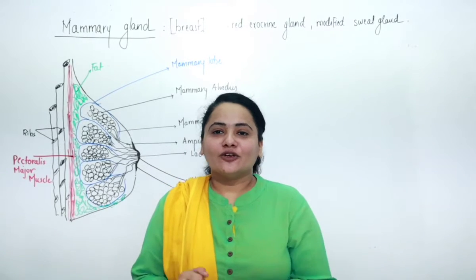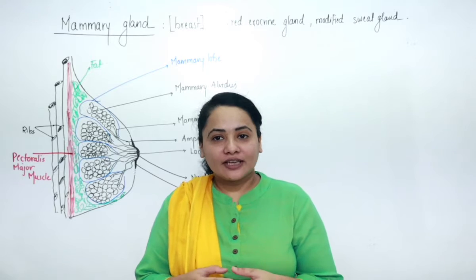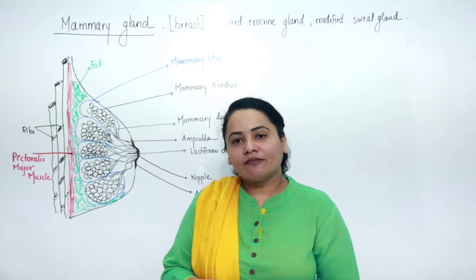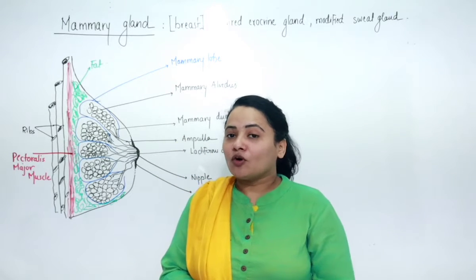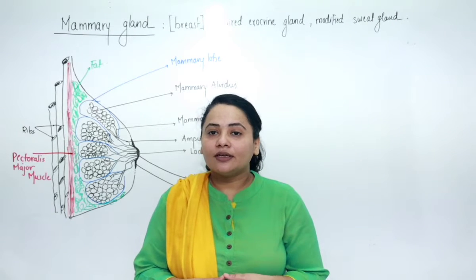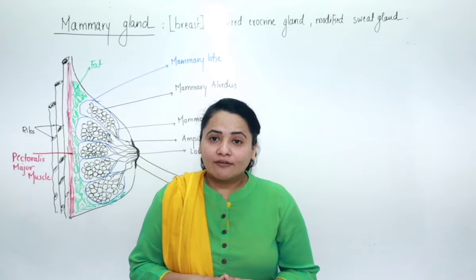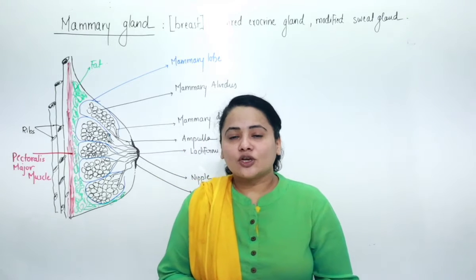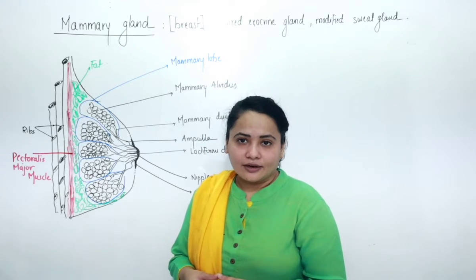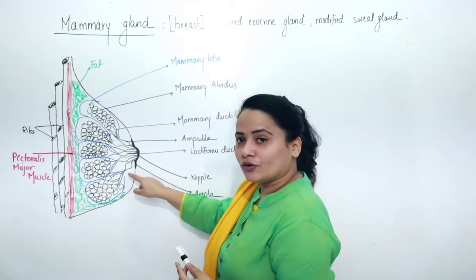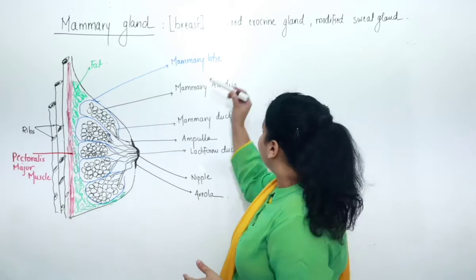After completing external genitalia, let's begin the next topic: the mammary gland. The mammary gland is also called a secondary sex organ in females, which develops under the influence of sex hormones at puberty. All mammals have mammary glands, and their function is to feed the newborn baby for nourishment. The mammary gland is well developed in females, whereas in males it is not functional. Mammary glands are exocrine glands, meaning they have ducts.